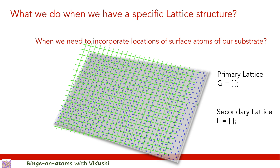One matrix will be outside the main Monte Carlo loop while the other will be inside. The G matrix will be outside the main Monte Carlo loop because graphene atoms are constant — they do not change their locations as the system moves from one state to another due to adsorbing and desorbing atoms. The L matrix, on the other hand, stays inside the main Monte Carlo loop, and its process remains the same as in the previous video.